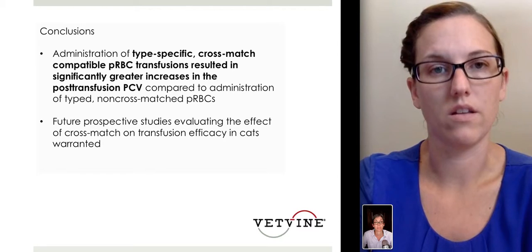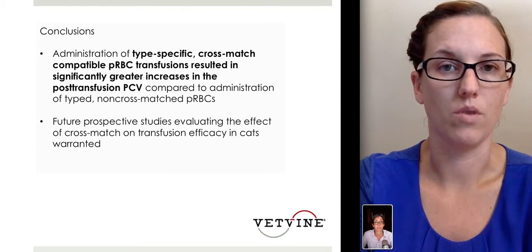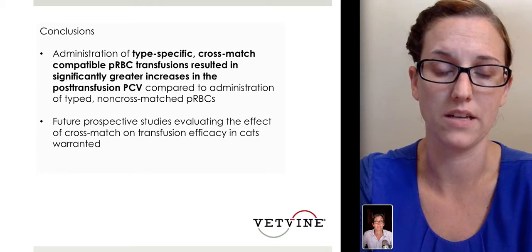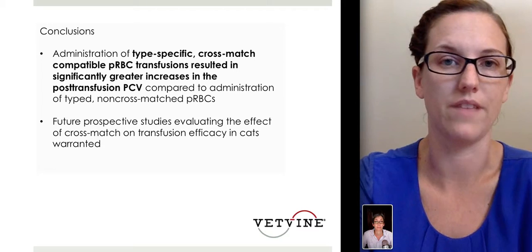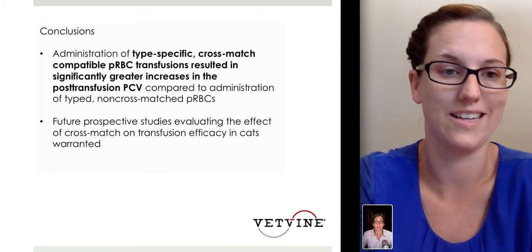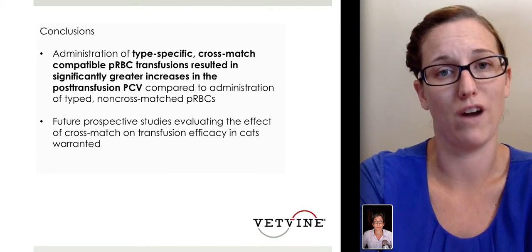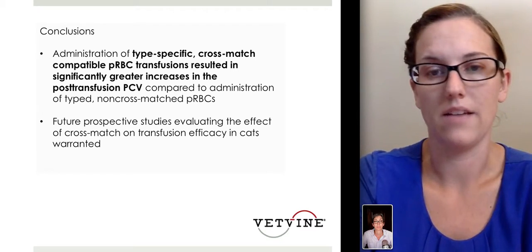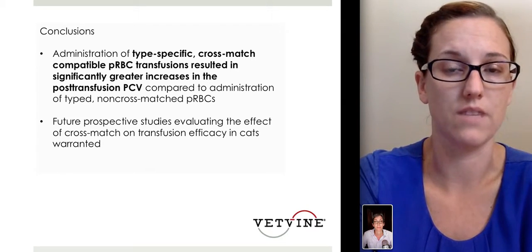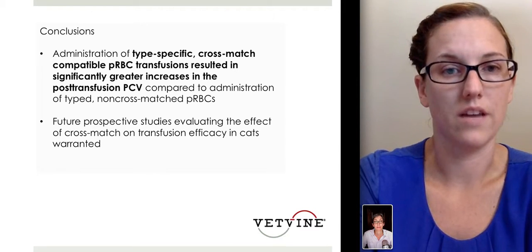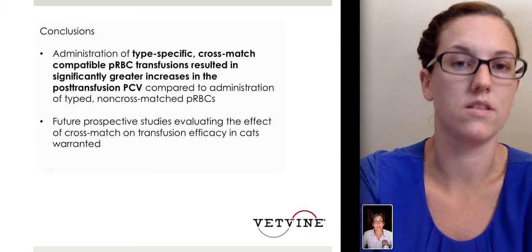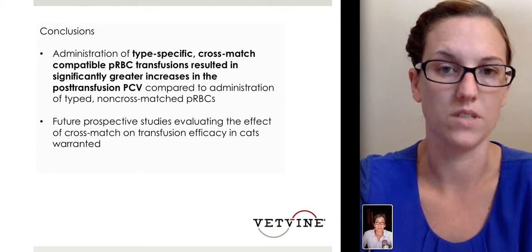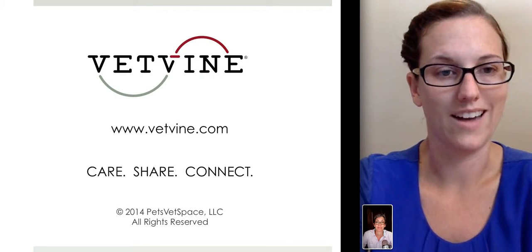It's important to consider cross-matching moving forward, especially in large referral hospital settings with frequent transfusions. When you're spending around $300–$350 per transfusion, it's worth paying for a cross-match to get the maximum benefit. Now that the Alvedia cross-match kits are available — taking only about 20 minutes and very similar to the Alvedia type kits — we're going to start seeing cross-matching performed more commonly in both cats and dogs. That's it this week on Holohan's Hot Topics.